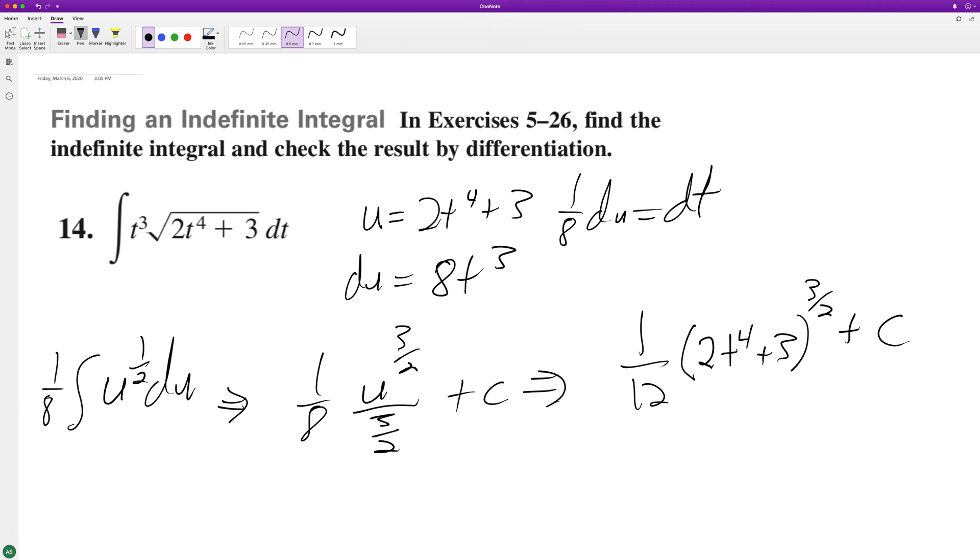And then if you check this out, you pull down, this becomes 8t cubed, and then the three halves gets rid of what's remaining so we get originally what we had here. And this three halves gets subtracted by one so it becomes one-half, which is the same thing as a square root.